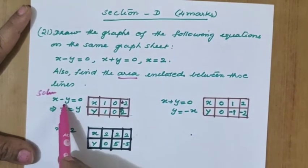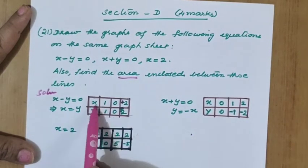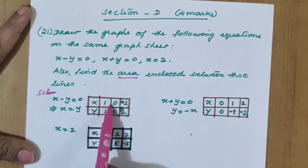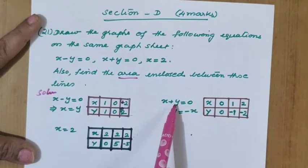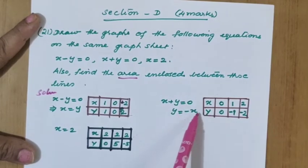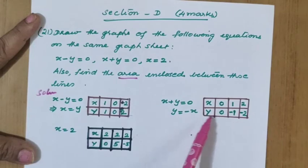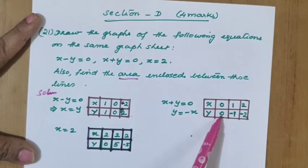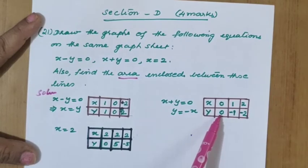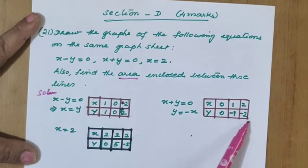The first equation is x minus y equal to 0, which means x and y are equal. So we make a table directly and write the same values for x and y: 1, 0, 2. For x plus y equal to 0, y equals minus x. So we make another table: when x equals 0, y is 0; when x equals 1, y is minus 1.